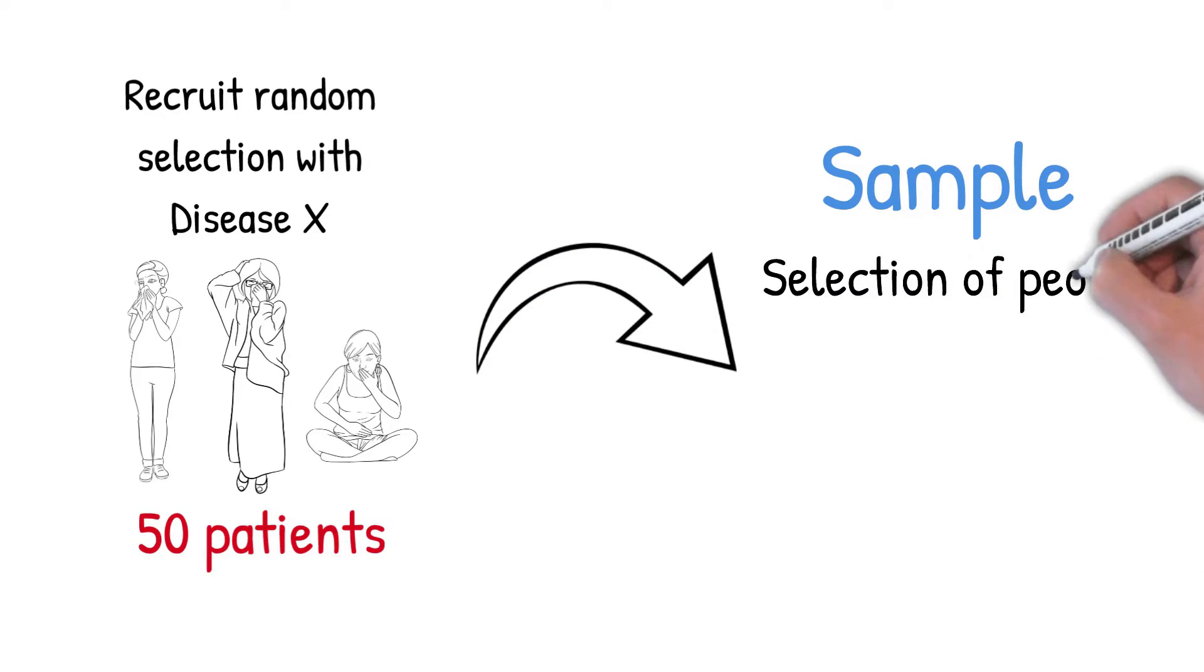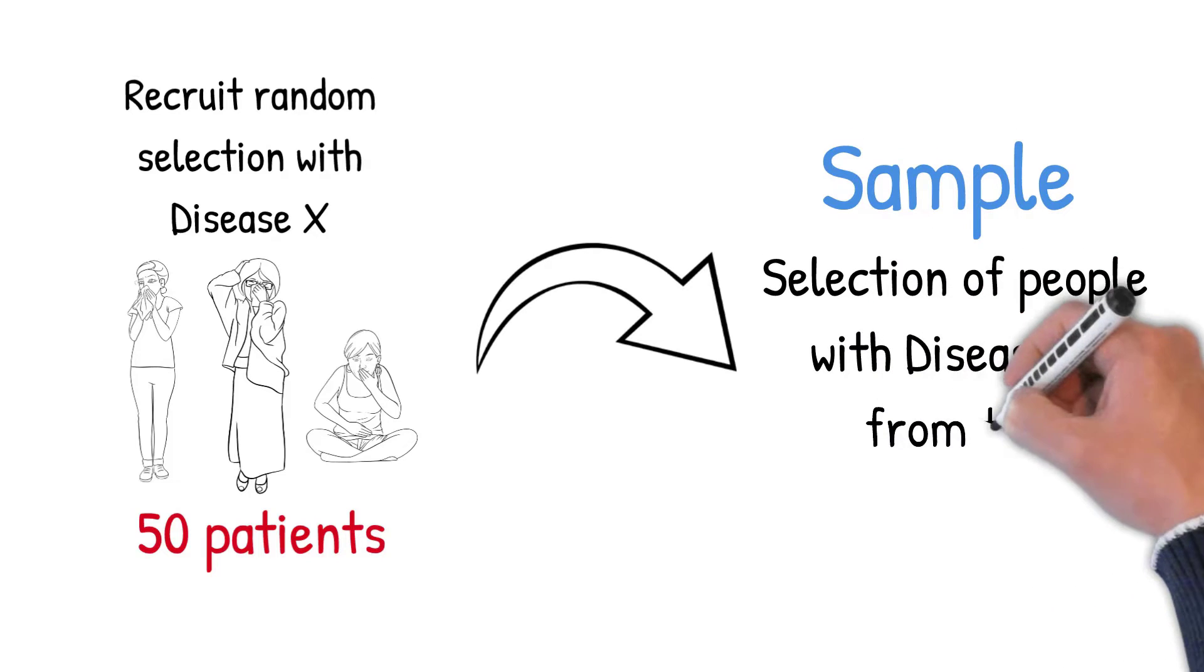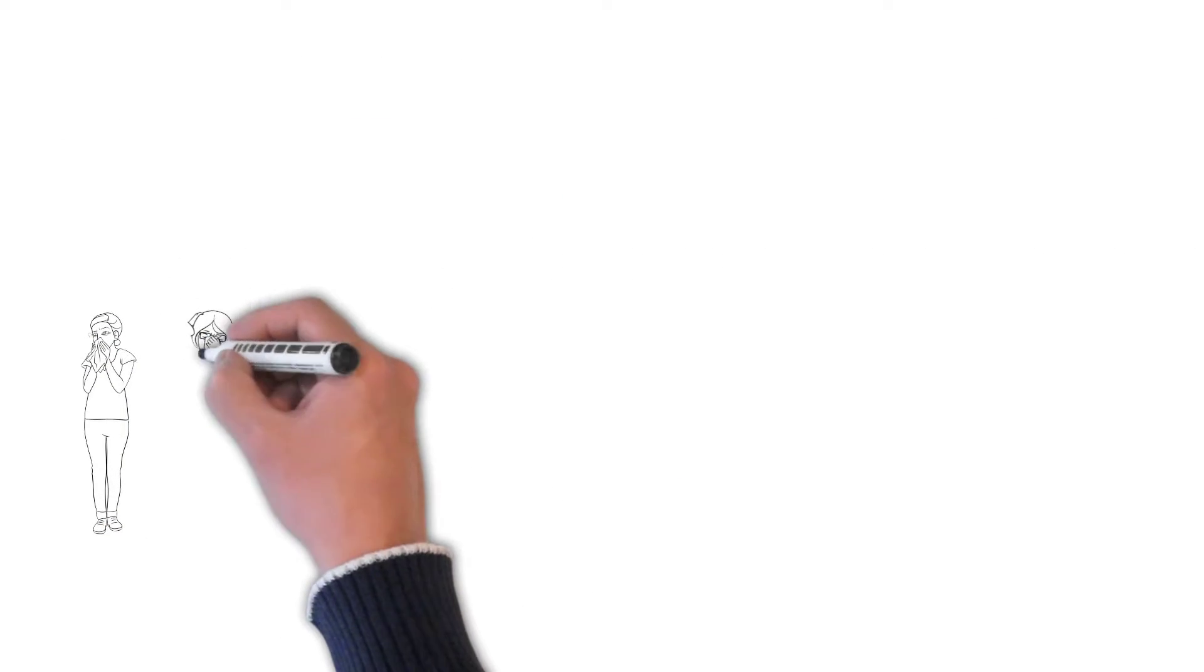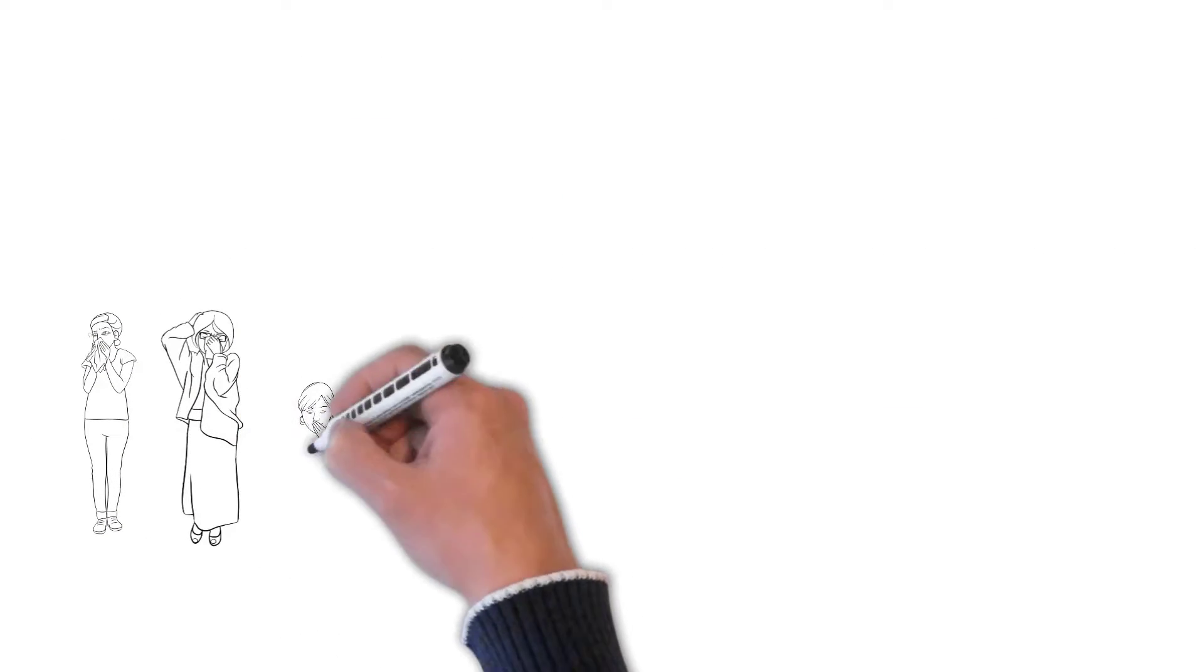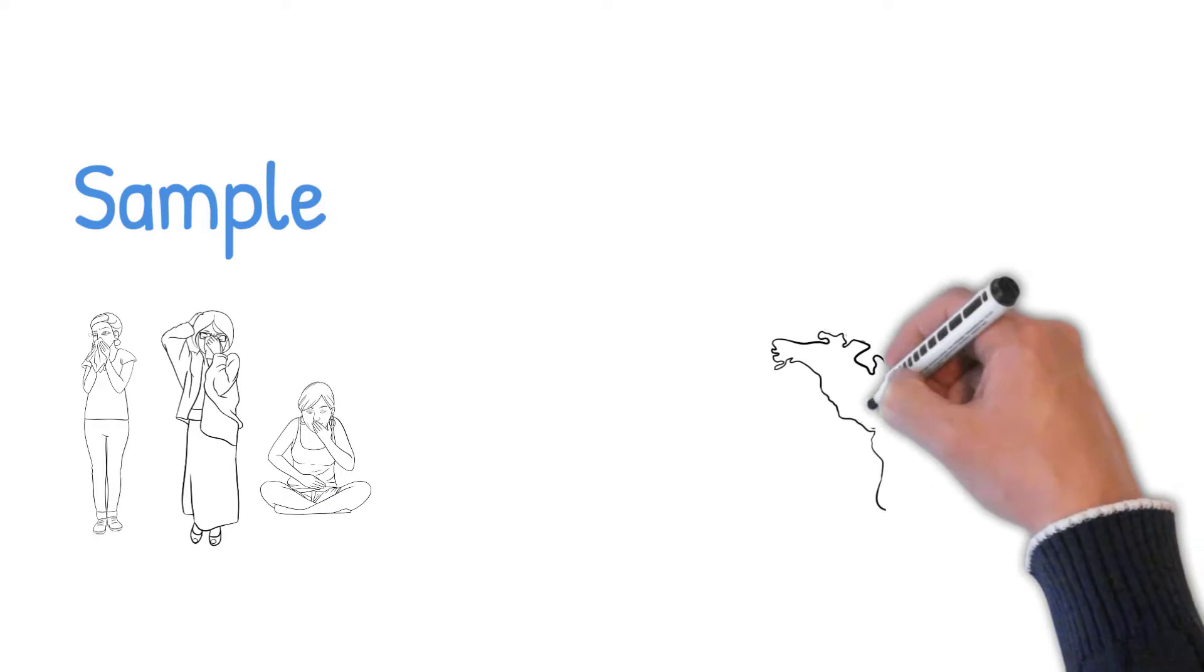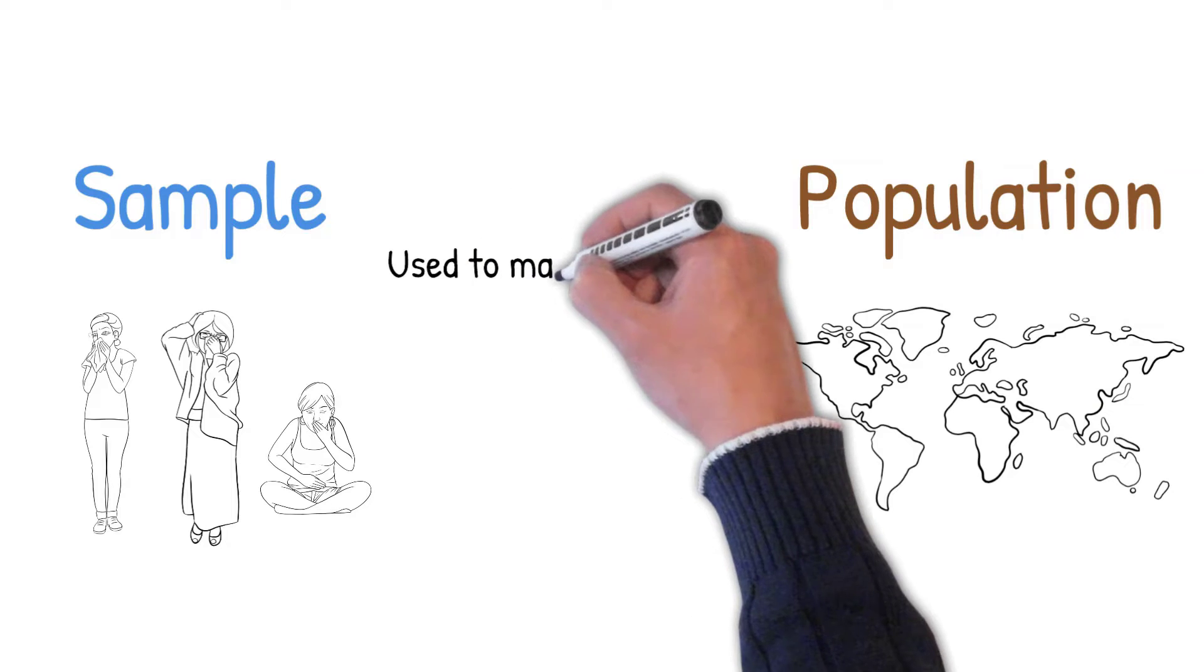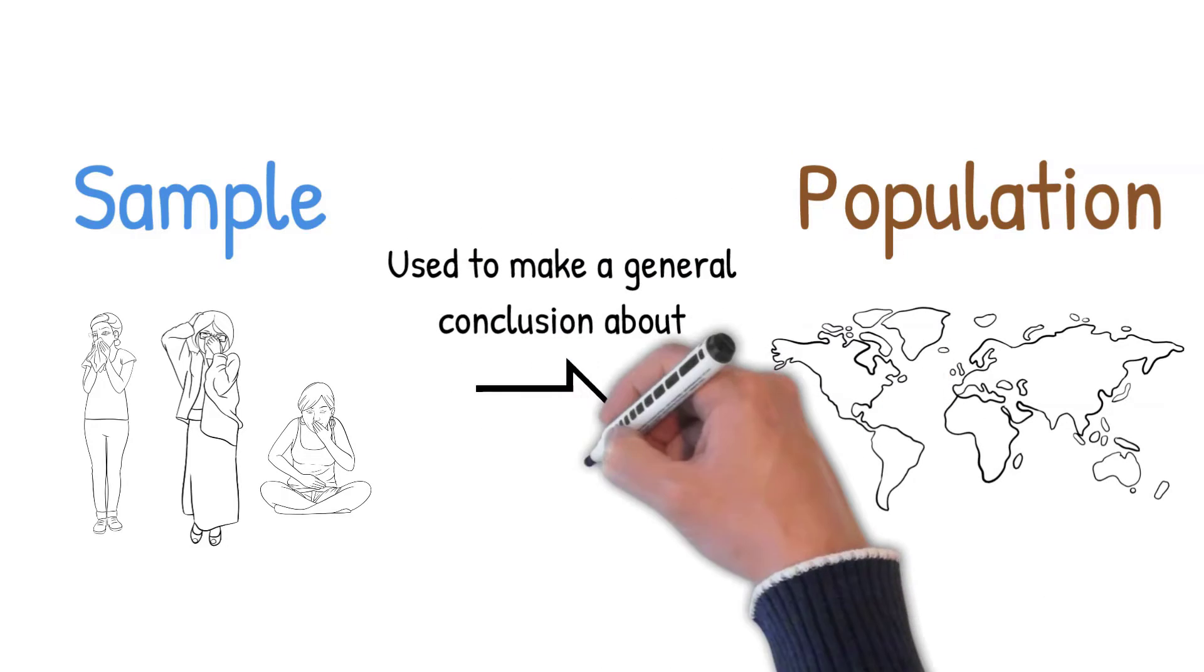A sample usually contains a smaller number of people compared with the population. So, why do we do this? Well, as I've mentioned, it is difficult to recruit everyone with Disease X. So, the best approach scientists use is to recruit a randomly selected sample that is then used to make a general conclusion about the population.